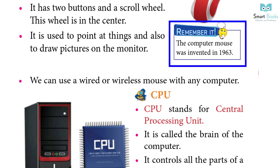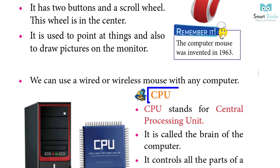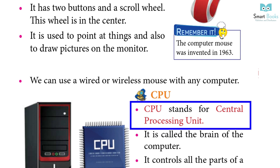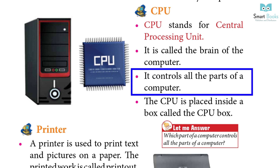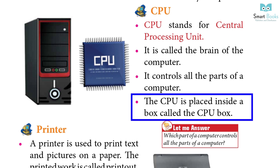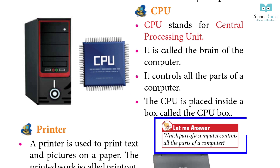The computer mouse was invented in 1963. CPU: CPU stands for Central Processing Unit. It is called the brain of the computer. It controls all the parts of a computer. The CPU is placed inside a box called the CPU box. Question: Which part of a computer controls all the parts of a computer?